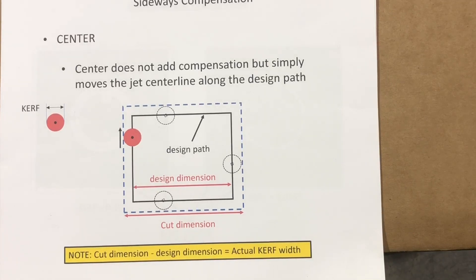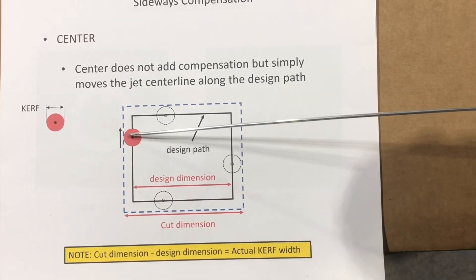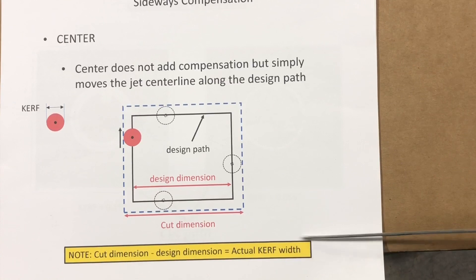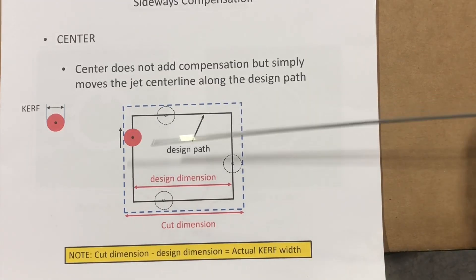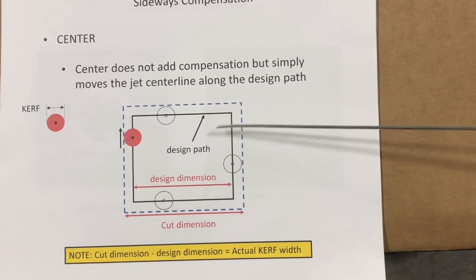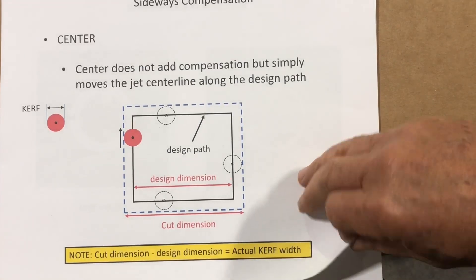Even though center is in the compensation selection area, it doesn't compensate at all. Center moves the jet's center line directly on the path of your design, so it's not compensating and you're not going to get the desired dimension. However, since center makes no compensation, if we take our cut dimension minus the design dimension, we'll know what the actual kerf is — because you're taking half a kerf on each side, which winds up being a total kerf. We'll see if that holds true when we get around to cutting.